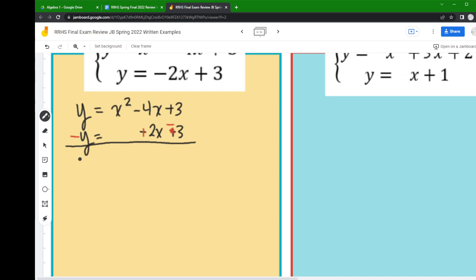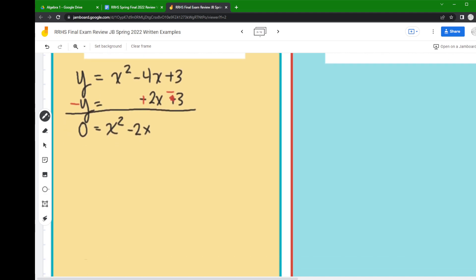So here we go. So y minus y is zero, x squared minus nothing is x squared, negative 4x plus 2x is negative 2x, and 3 minus 3 is 0. Now the next step here is to factor the problem.